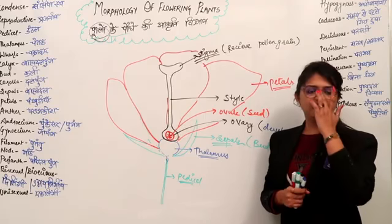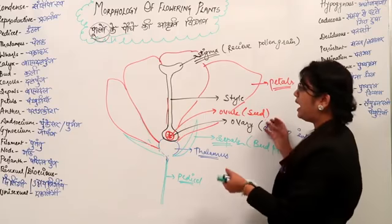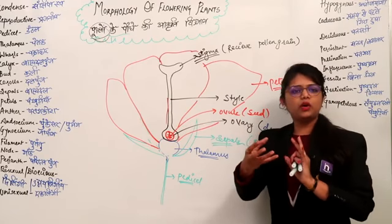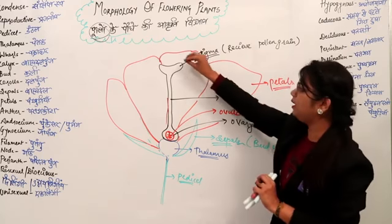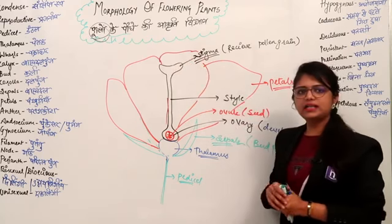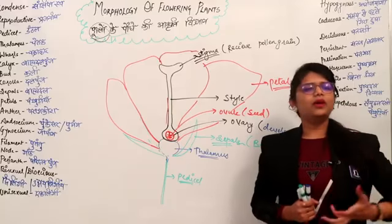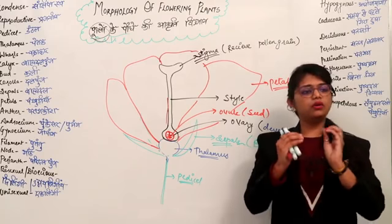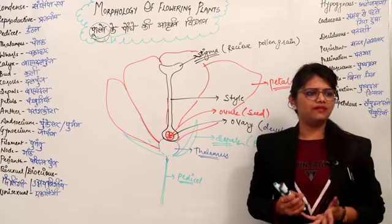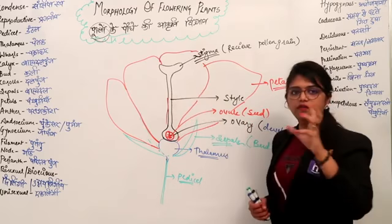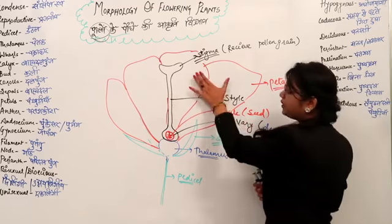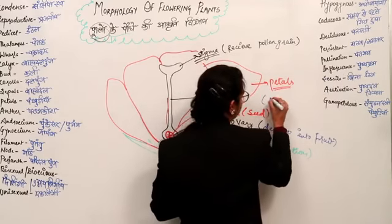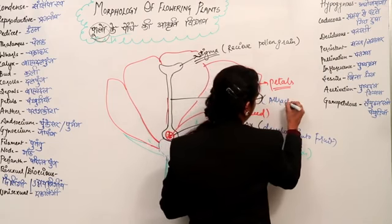Pollinating agents like insects come and sit on pollen grains. When a butterfly — Titli — visits, it is attracted to beautiful flowers. It tries to sit on a beautiful flower, and what attracts it to the flower? The Petals. So what is the function of Petals? To attract pollinating agents.